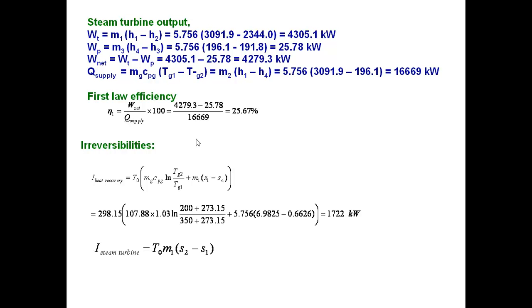Next component is the steam turbine. The irreversibilities formula associated in this steam turbine is T0 into M1 into (S2 minus S1), that is the final entropy minus initial entropy. After substituting this mass flow rate, entropies and reference temperature, it is 710 kilowatts irreversibility loss in the steam turbine.